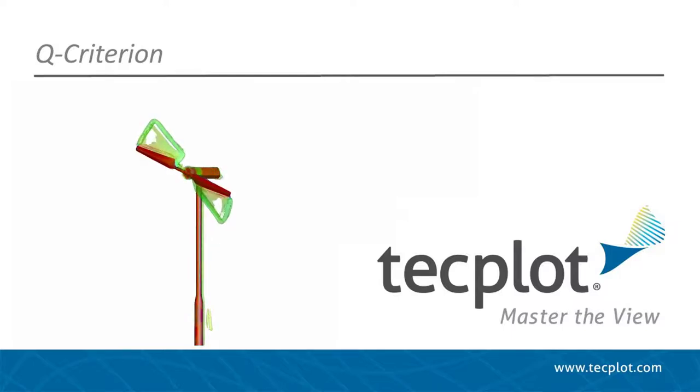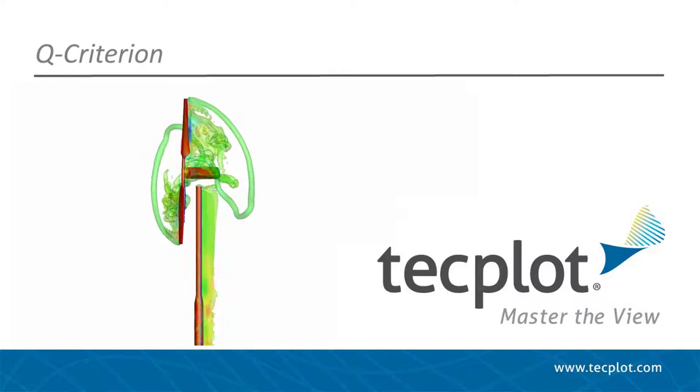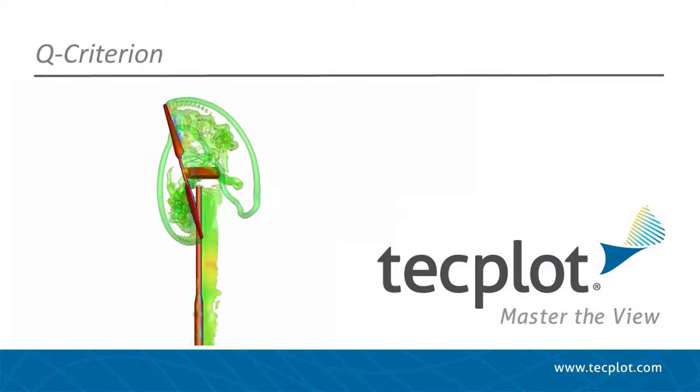Q-criterion is an important calculation used to identify vortices. In this video, we'll show you how to calculate Q-criterion, plot the results, and compare the performance of PLOT3D and SISL file formats for this work.